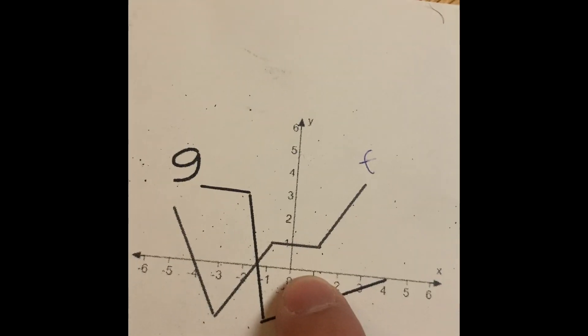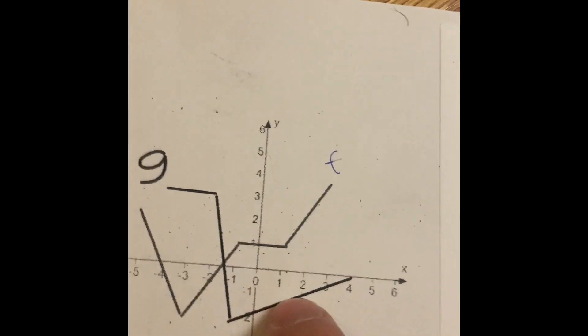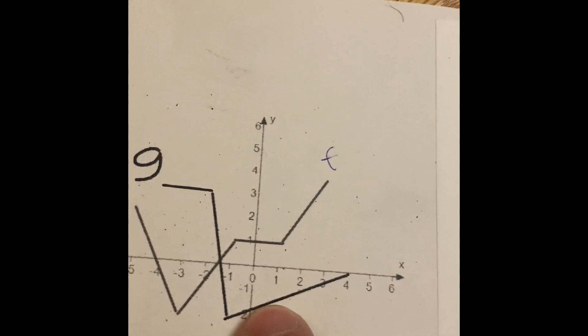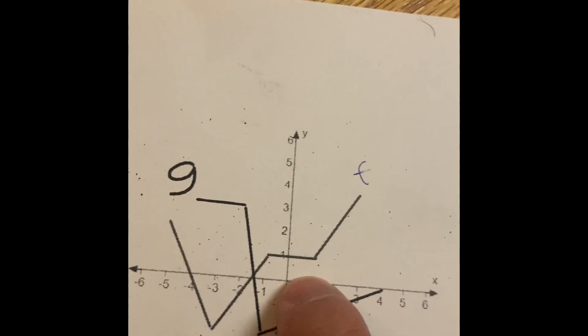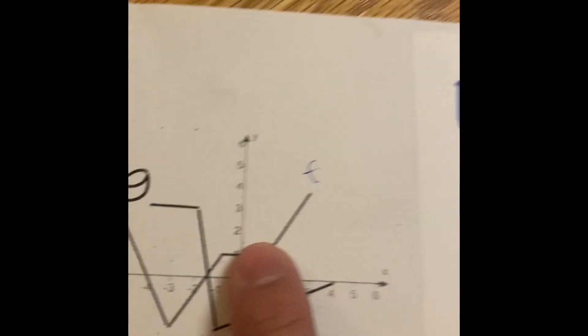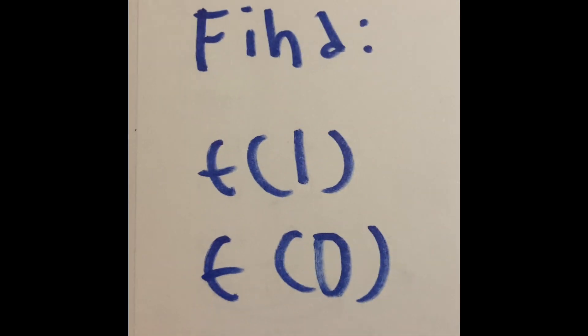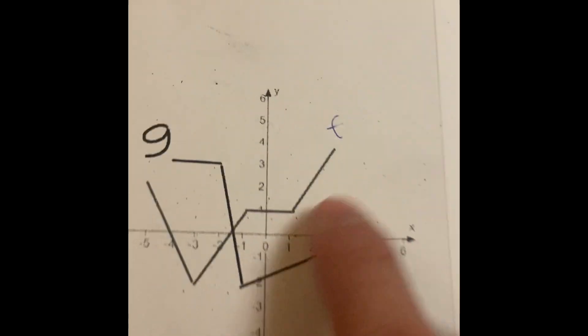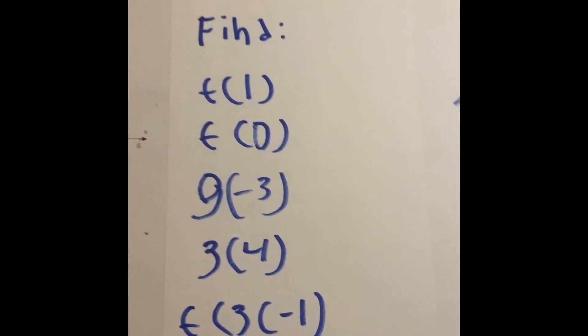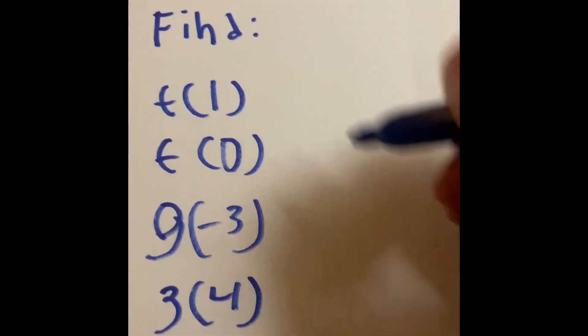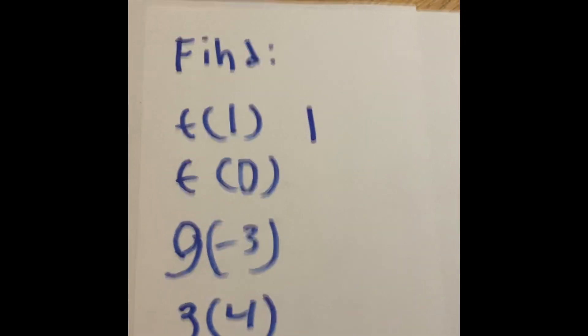We could go to the f, or go to the g function. Well, in this case now, we have to go to the f, because that is saying the function of f. So, meaning that we would go right over here. So the function of one is going to be one. See how easy that is? It's basically trying to catch a train.